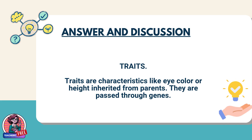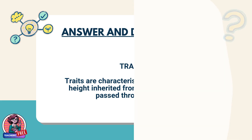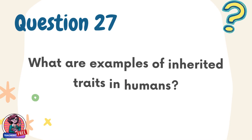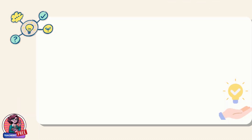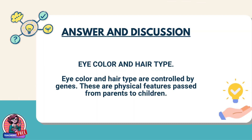Question 27. What are examples of inherited traits in humans? Answer: Eye color and hair type. Eye color and hair type are controlled by genes. These are physical features passed from parents to children.